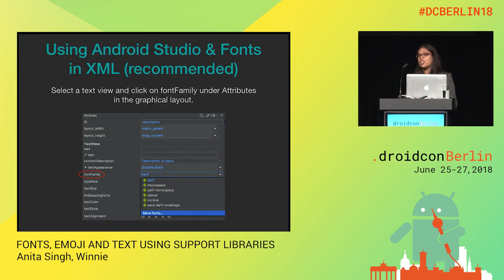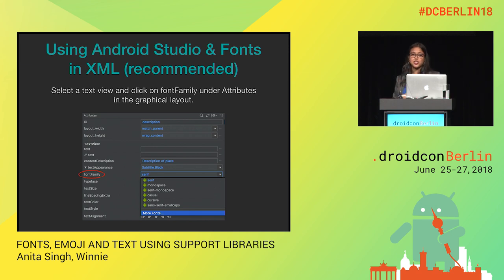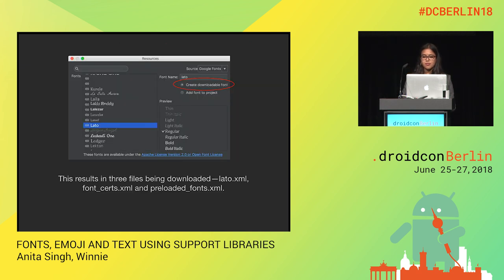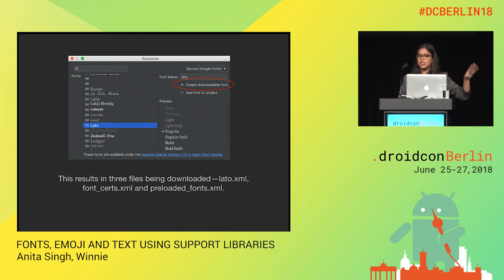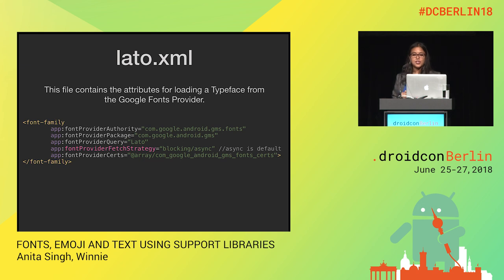What you just saw is cool, but you probably don't want to do that in every activity, fragment, or custom view group. That's why using Android Studio with fonts in XML is a better way to do it. Open up the graphical editor, find the font family attribute, scroll down to more fonts, select the Google font you're looking for, and select 'Create downloadable font.' If you do these steps, three files get downloaded automatically via Android Studio. The first is the font family file, but in this case the attributes are for downloading the fonts versus bundled fonts.